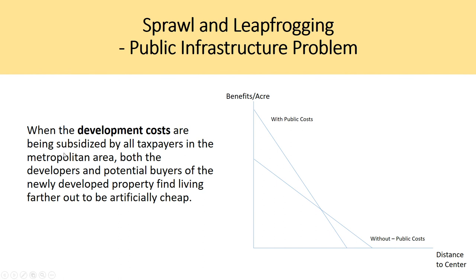When development costs are subsidized by all taxpayers in the metropolitan area, both developers and potential buyers of newly developed property find living farther out to be artificially cheaper. With public costs accounted for, the bid-rent function is steeper; without them, it is flatter, and the equilibrium distance to center is further out.